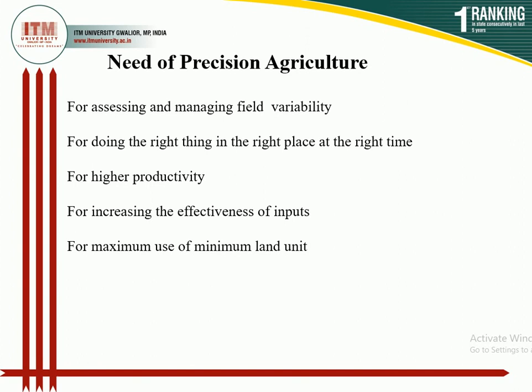Another reason is for maximizing use of the minimal land unit. After knowing the status of land, a farmer tries to improve each and every part and use it for production. Each land is different, having different chemical and physical properties. If we are well aware of all the land features and differences, we can apply inputs accordingly, so a smaller amount of land can produce large yield. That's why precision agriculture is needed.